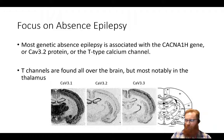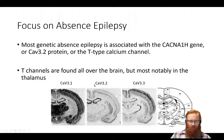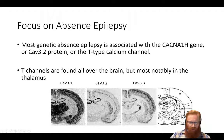Nearly all genetic absence epilepsy — Mendelian absence epilepsy — is associated with the CAV3.2 protein, which is a T-type calcium channel in the brain. It is found everywhere that T-type calcium channels are expressed, but most notably in the thalamus. Here we have the expression of these three channels in the mouse brain: CAV3.1, CAV3.2, and CAV3.3 — although they're expressed in other regions too, not purely in the thalamus.